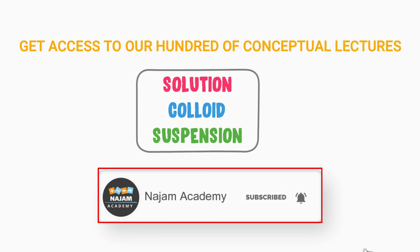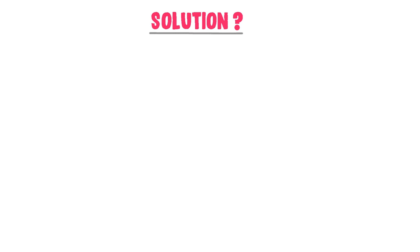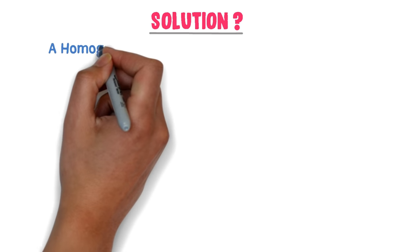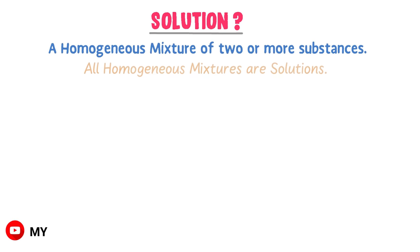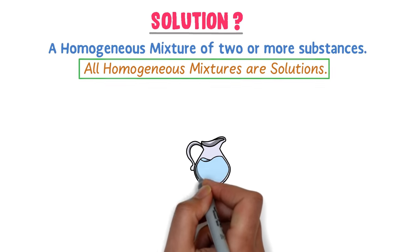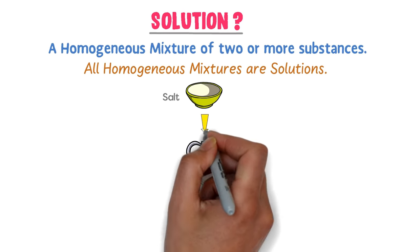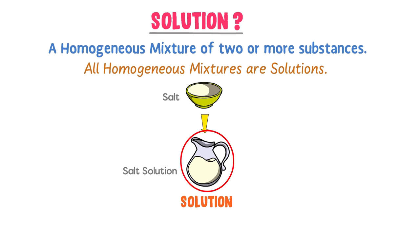A solution is a homogeneous mixture of two or more substances. So all homogeneous mixtures are solutions. For example, when you dissolve salt in water, you get a solution. This is also an example of a true solution.